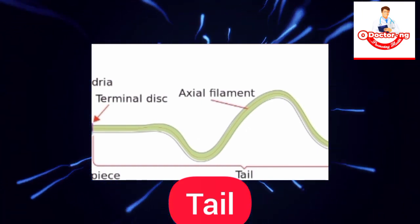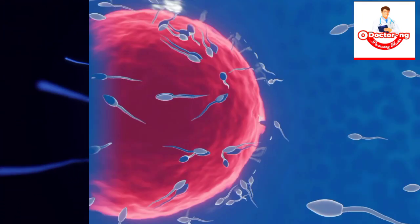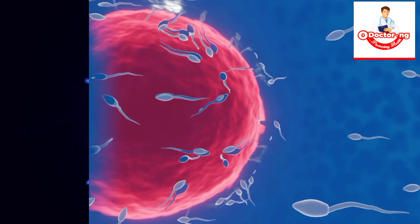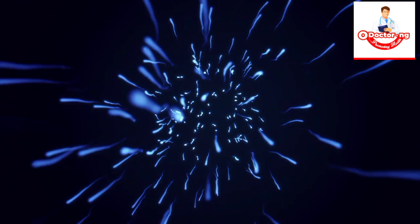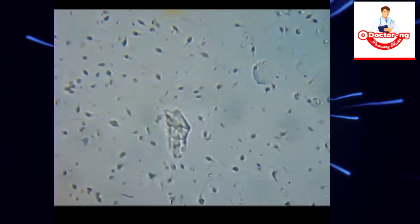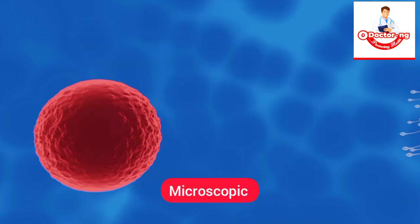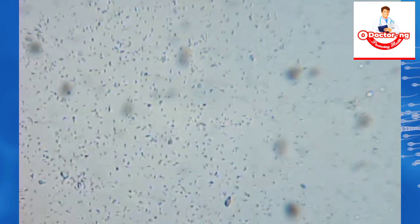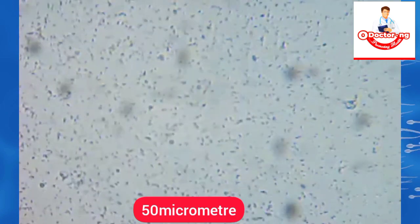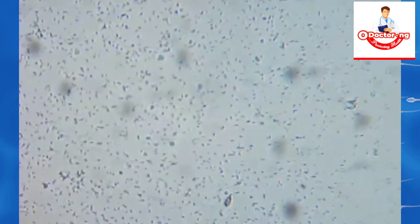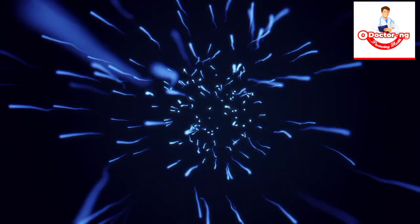Sperm cells are microscopic, measuring about 50 micrometers in length, making them too small to be seen with the naked eye and can only be viewed with a microscope.